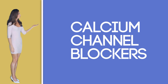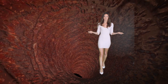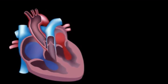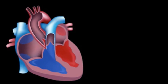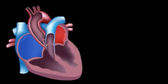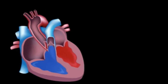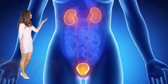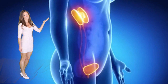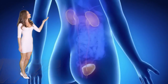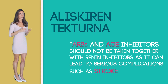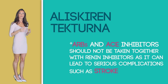Calcium channel blockers relax the muscles of the blood vessels; some of them slow down the heart rate. Sometimes this medication is also given with an ACE inhibitor in the case where ACE inhibitors may not effectively work on their own. Note: grapefruit juice intensifies the effect of this medication, which may put the patient at greater risk for side effects. Renin inhibitors are also used. Kidneys produce enzymes called renin which initiate a chain of reactions of chemicals that leads to high blood pressure. Renin inhibitors, such as aliskiren or Tekturna, work by slowing down the formation of renin. Note: ARBs and ACE inhibitors should not be taken together with renin inhibitors because it can cause serious complications such as a stroke.